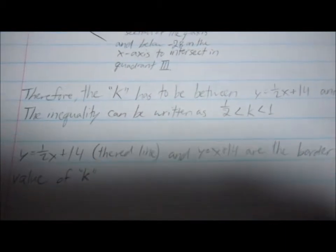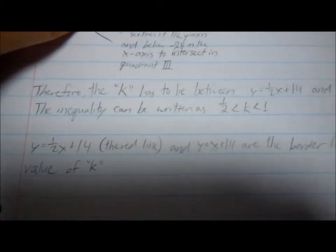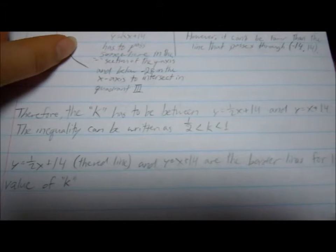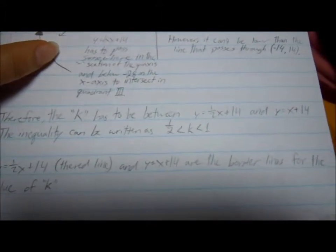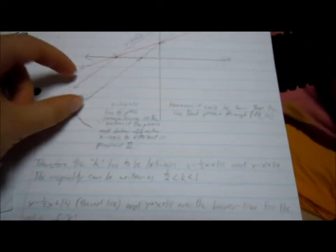So the borderlines are, as I said, y equals 1 half x plus 14 and y equals x plus 14. So these two lines. Thank you.